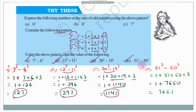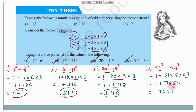For the fourth one, find 51³−50³. Applying the formula: 1 + 51×50×3 = 1 + 7650 = 7651. So the answer is 7651.